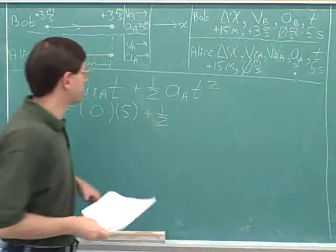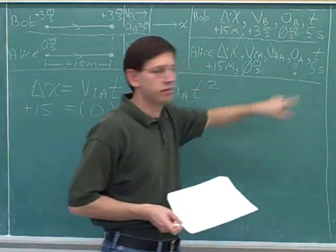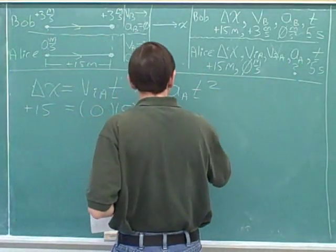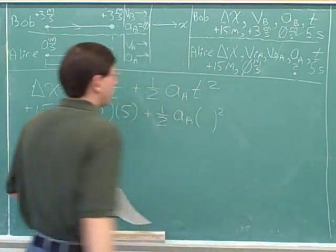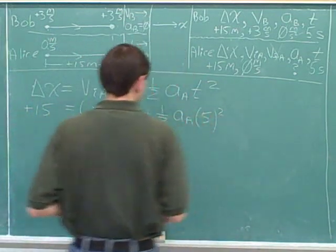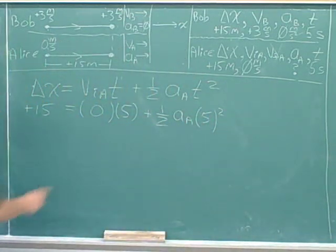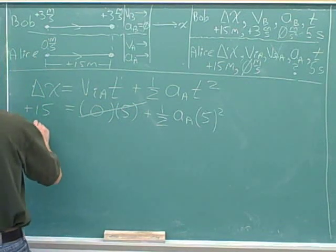What do we plug in for Alice's acceleration? Well, that's the unknown, the question, so we don't plug in for that. And for the time, again, we can plug in five. This term drops out because it's got a zero, so we simplify.